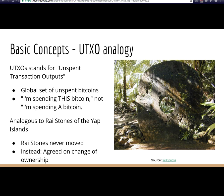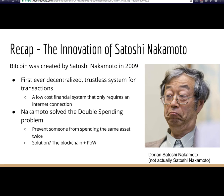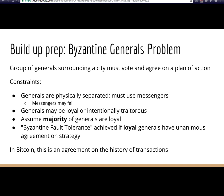Satoshi Nakamoto created Bitcoin in 2009 — the first-ever decentralized trustless system for digital payments. He solved the double-spending problem: in a digital distributed currency, how do you prevent someone from spending the same asset twice? His solution was the blockchain and proof of work. More generally, he solved the Byzantine Generals' Problem — Bitcoin's distributed nature is a specific instantiation of it.